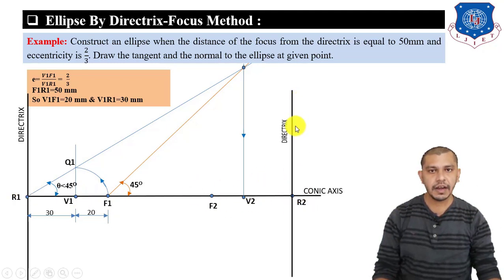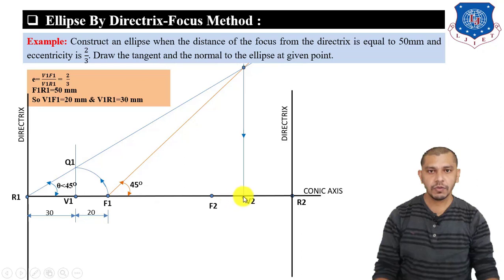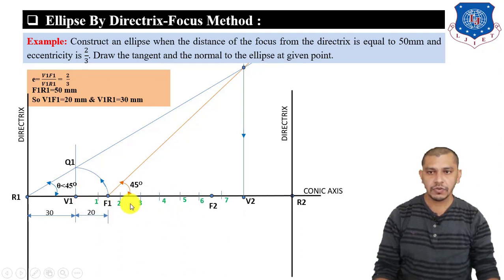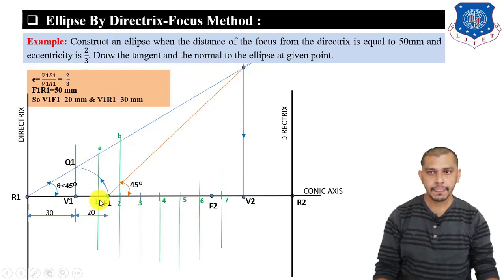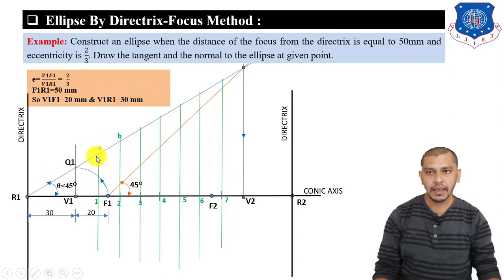Now make divisions between V1 and V2 — these need not be equal; mark them randomly as 1, 2, 3, 4, 5, 6, 7. From each division, draw lines perpendicular to the conic axis (parallel to the directrix). Mark the intersection points of these perpendicular lines with the RQ line as A, B, C, D, E, F, G.